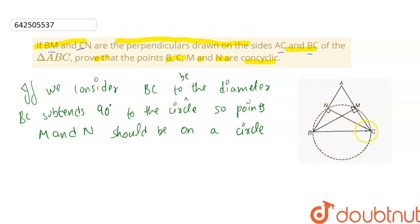So, we know that CN and BM are the perpendiculars, 90 degree subtended on the circle. That means M and N should be on the circle.